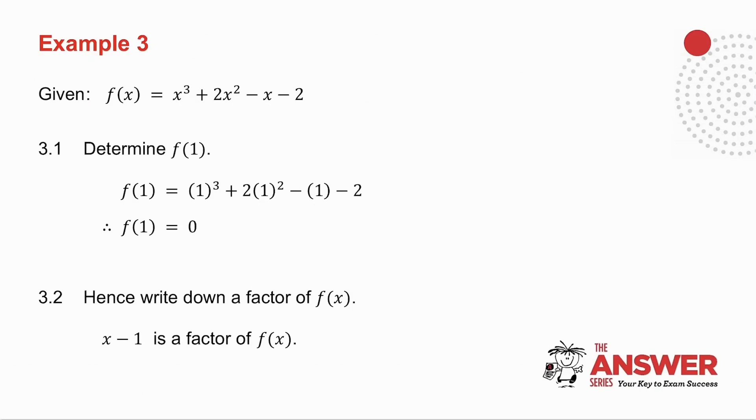The first question is to determine f of 1. So in place of x, I put 1 and I get that f of 1 is 0. So 3.2 says hence write down a factor of f of x. Well, if f of 1 is 0, that means 1 is a root of the equation, which means that x minus 1 is a factor of f of x.